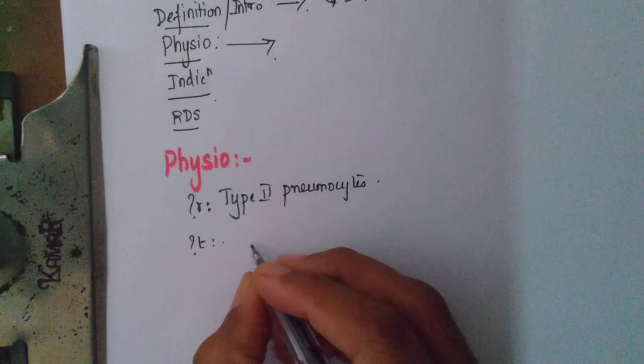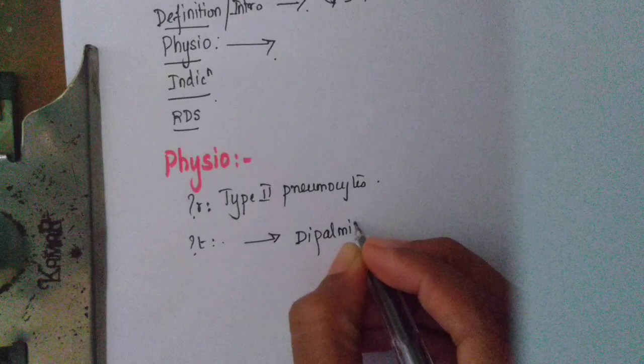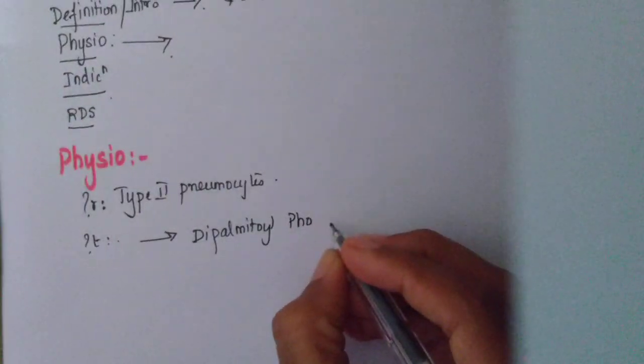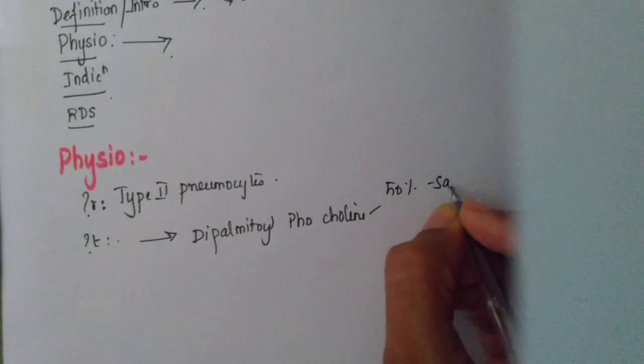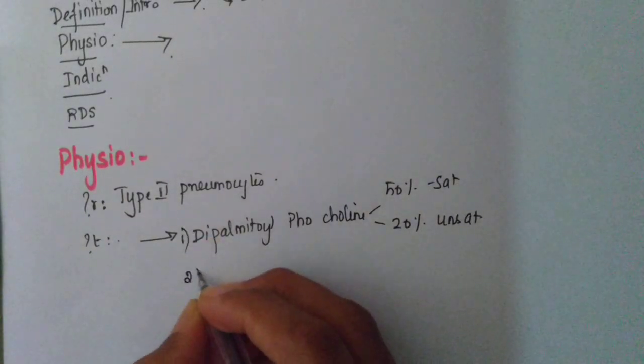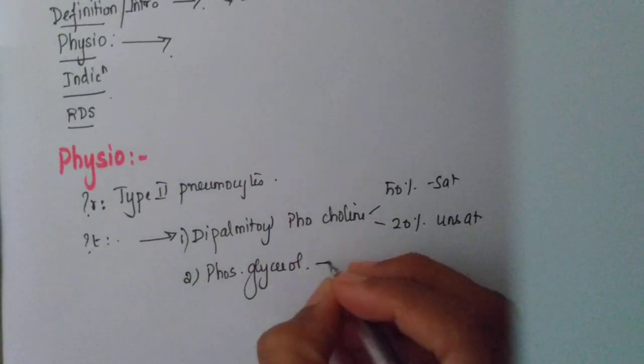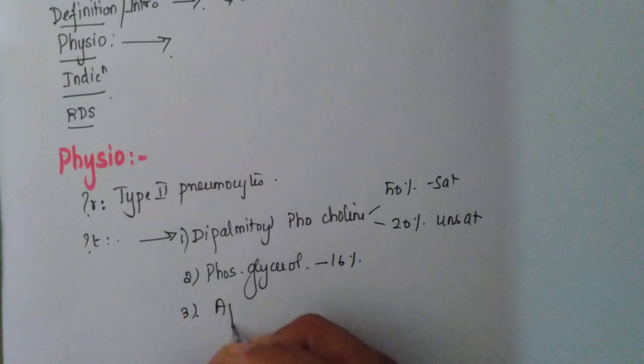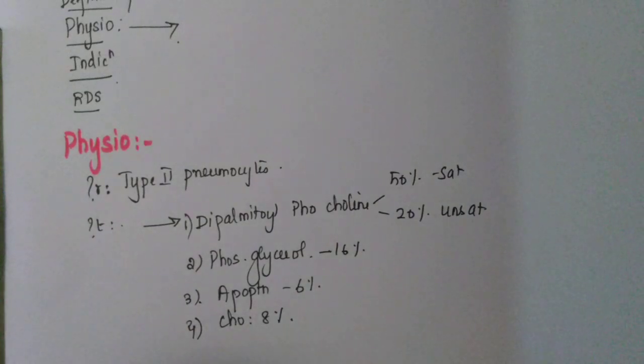What does it contain? It contains about, the main content is dipalmitoyl phosphatidylcholine, and 50% is saturated and 20% is unsaturated. The second content is phosphatidylglycerol, around 16%. Then, apoprotein is around 6%, then cholesterol is around 8%.